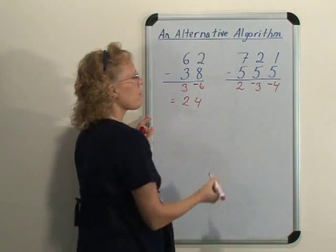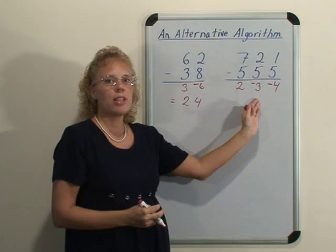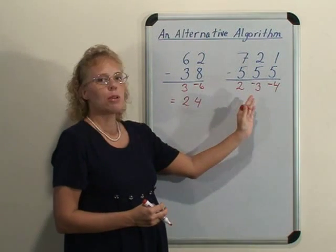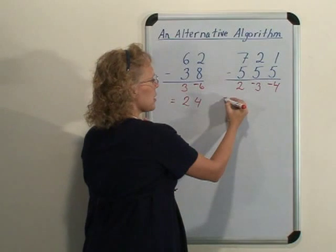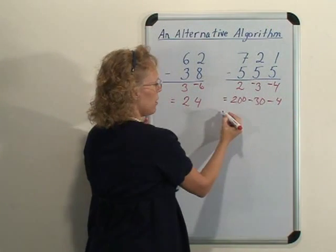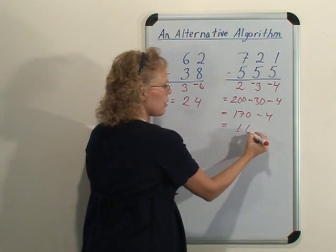And here we have two steps to figure out. This is like 200 take away 30 take away 4 so you can go 200 take away 30. It is 200 take away 30 take away 4, so it is 170 take away 4 equals 166.